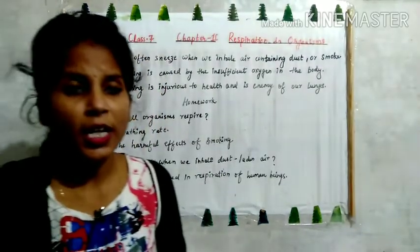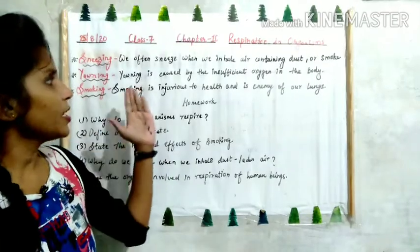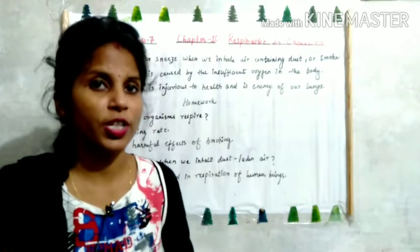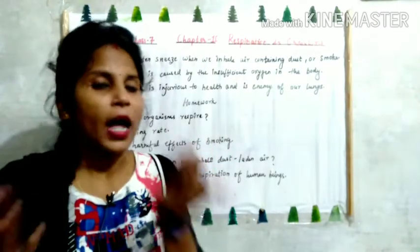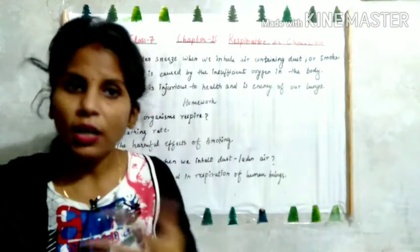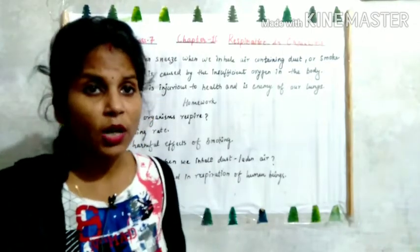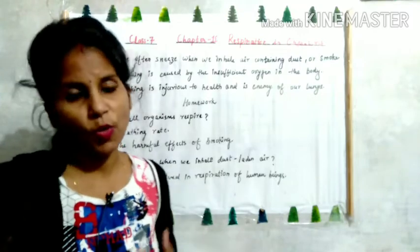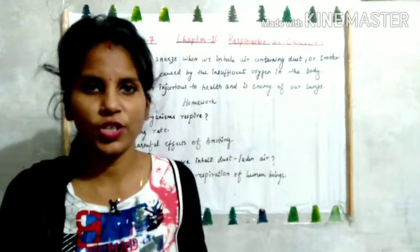Second is yawning — called jamaii or ubasi in Hindi. Yawning is caused by insufficient oxygen in the body. When there is insufficient oxygen, we open our mouth wide and we don't have any control over it. We open our mouth to take in oxygen. When we feel bored, drowsy, or sleepy, we yawn to get enough supply of oxygen in our body.